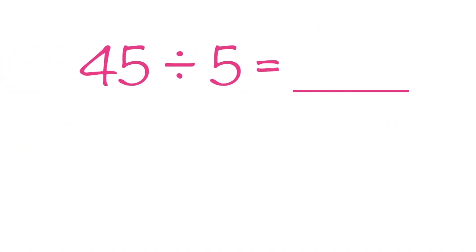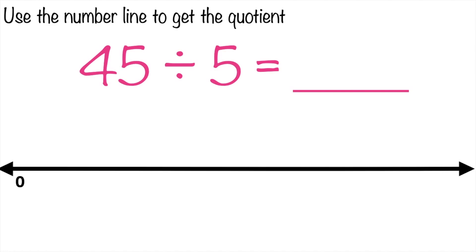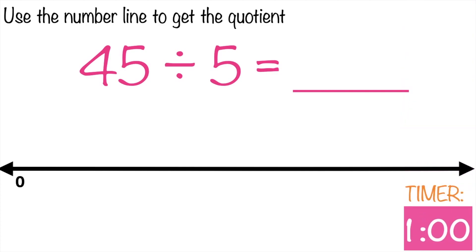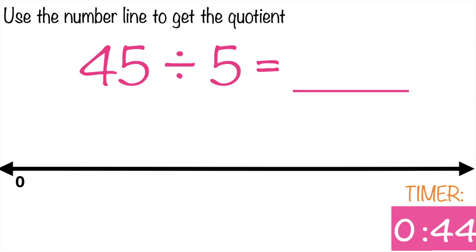45 divided by 5 equals blank. Again, use the number line to get the quotient. The number line starts at 0. Timer starts now. Let's go.